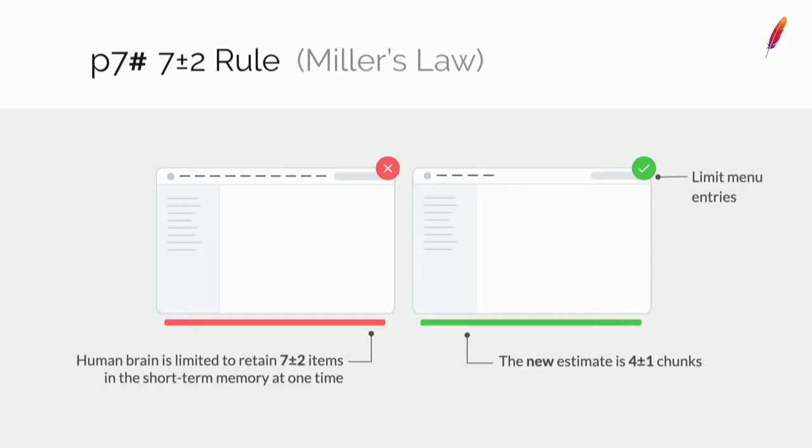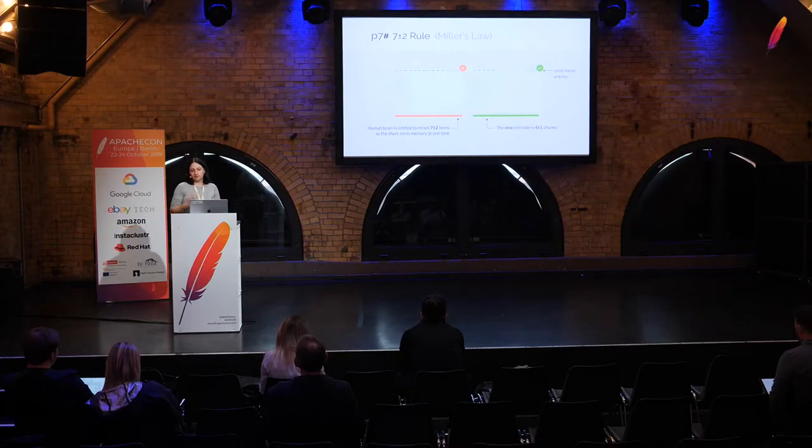Miller some time ago made studies on the short-term memory of people. They were given many words and he quantified how many people could remember. The conclusion was seven plus or minus two items, and for a long time this argument was used to limit entries in menus. Currently, new estimates suggest four plus or minus one, and even that is debatable. The conclusion is: try to limit entries so users can remember them and know exactly where they are in the interface.